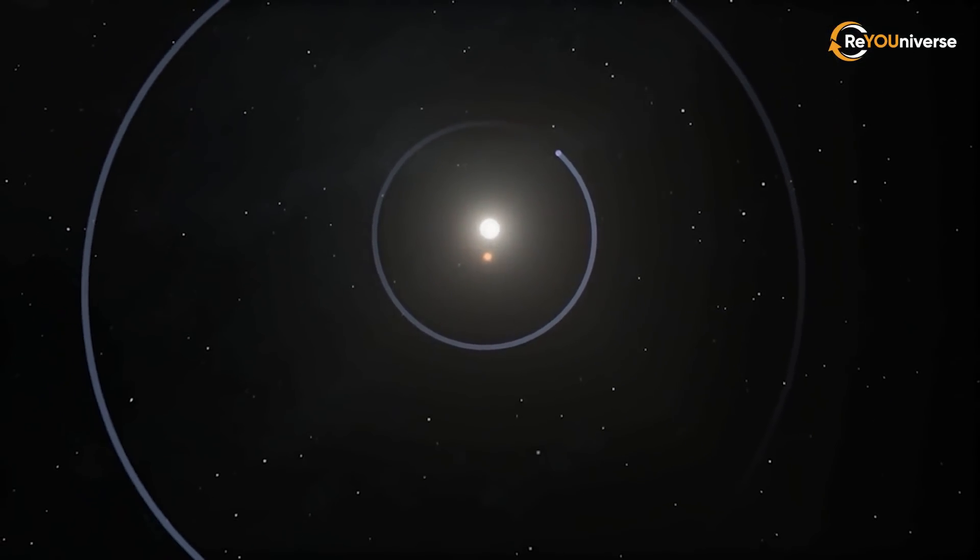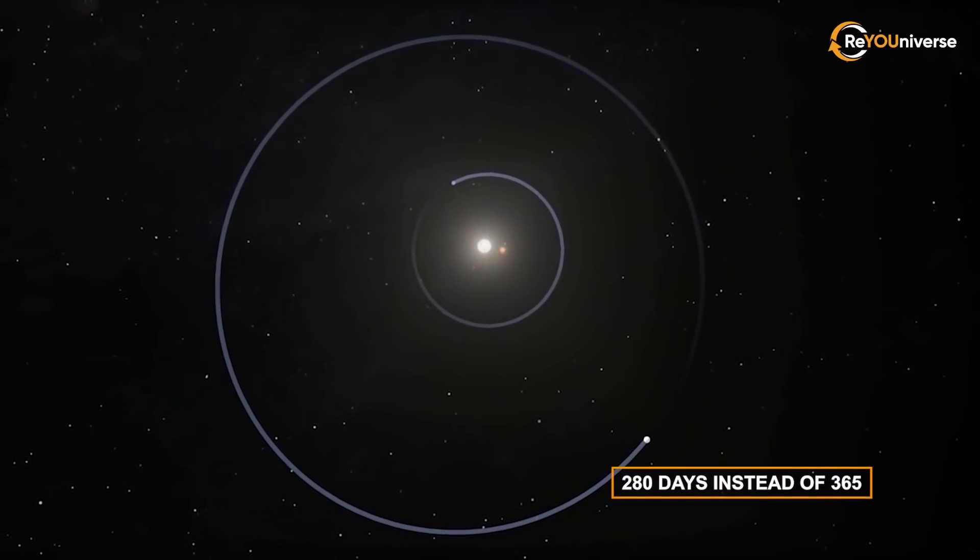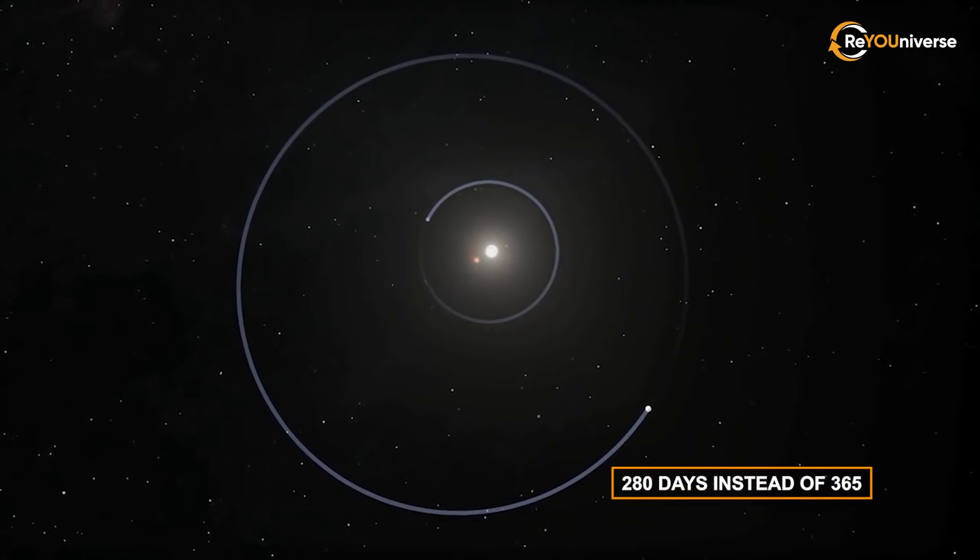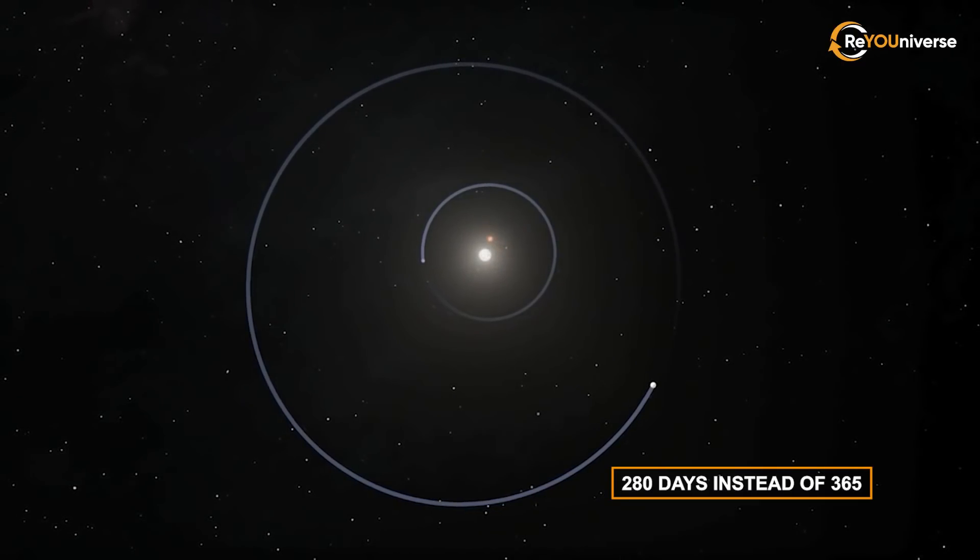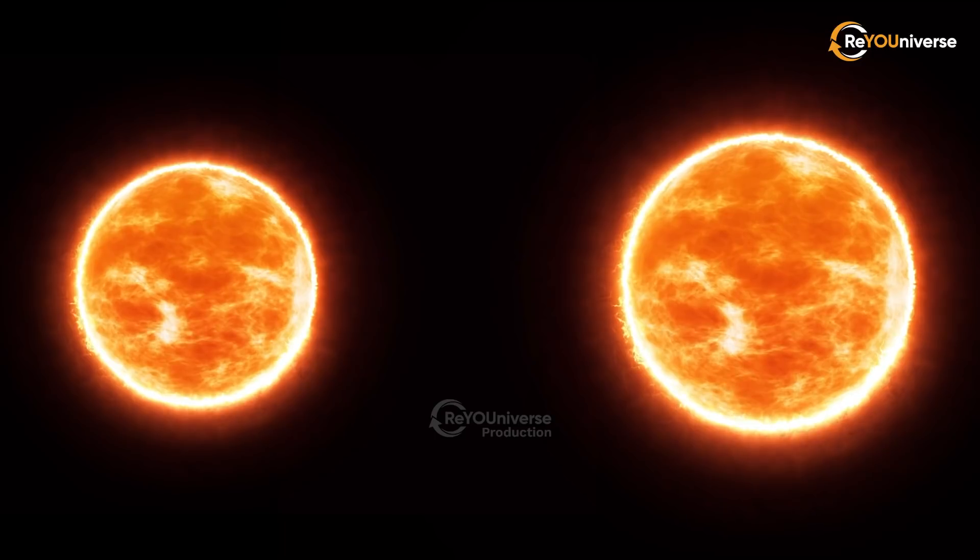Since the combined gravity of the two stars would be stronger, it would take the Earth 280 days instead of 365 to complete a full orbit. A year on Earth would be shorter, but not by much.